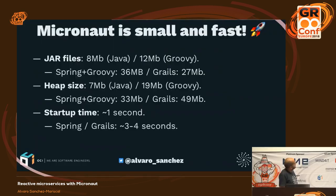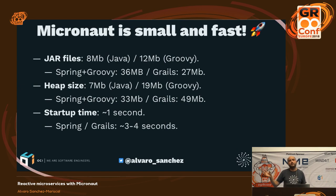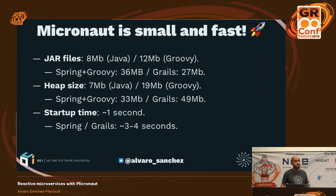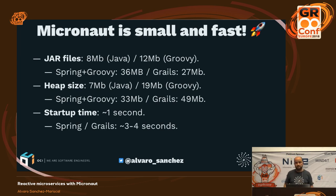Looking at the comparison slide: Hello World in Spring Boot or Grails is around three to four seconds startup time; in Micronaut it's less than a second. For memory footprint, Spring Boot and Grails are around 40 to 50 megabytes, while Micronaut is 10 megabytes or less. It's really small.